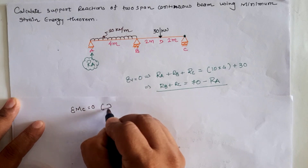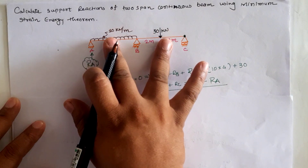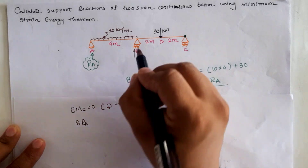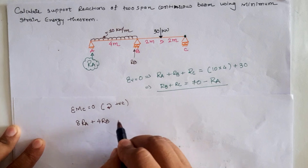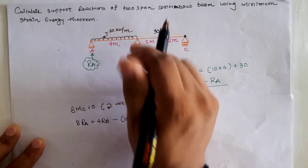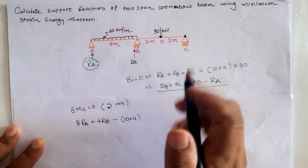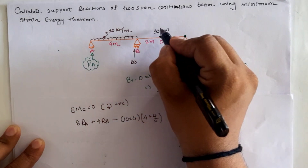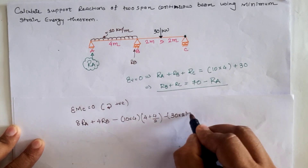Using the next equilibrium condition, sigma moment at location C equal to 0, treating clockwise moment as positive: at location C, Ra times the total distance of 8 meters gives 8·Ra (clockwise, positive). Due to Rb it is 4·Rb; due to the UDL, the total load times the CG distance from C (which is 4 + 4/2), and due to the 30 kN load it is minus 30 times 2, all equal to 0.